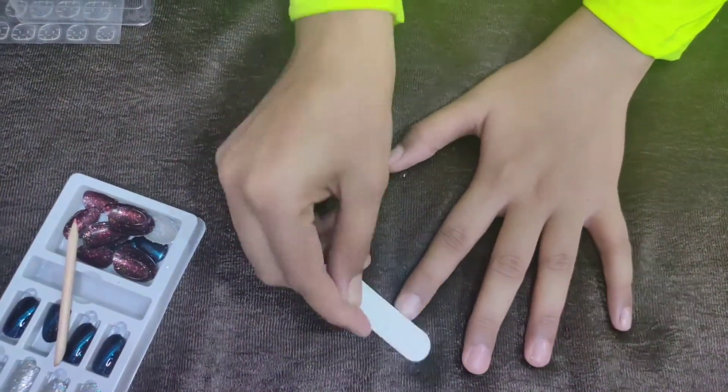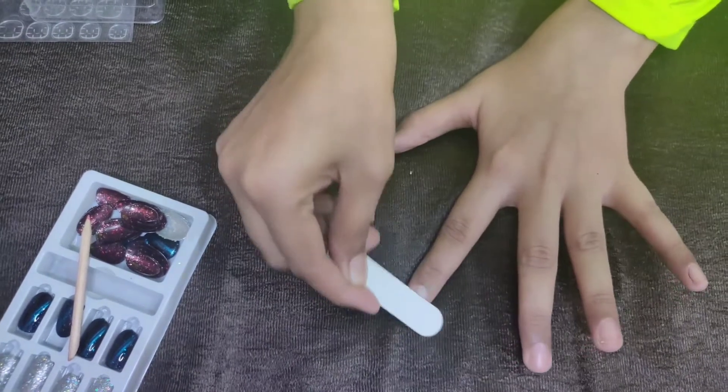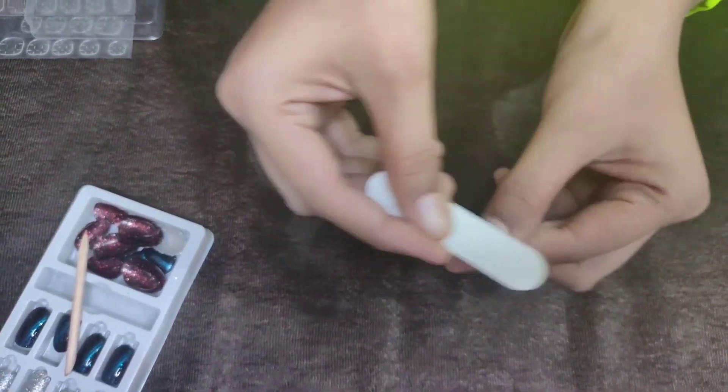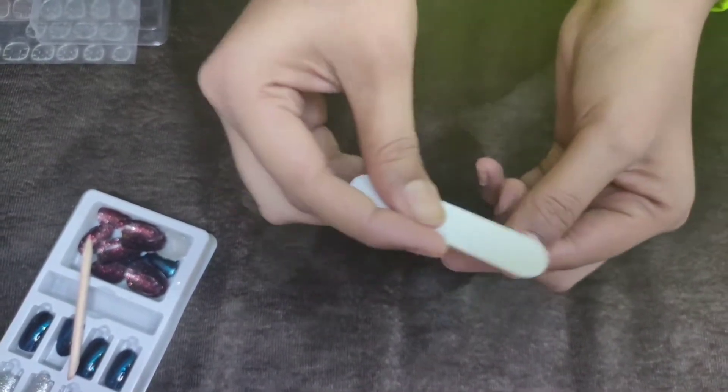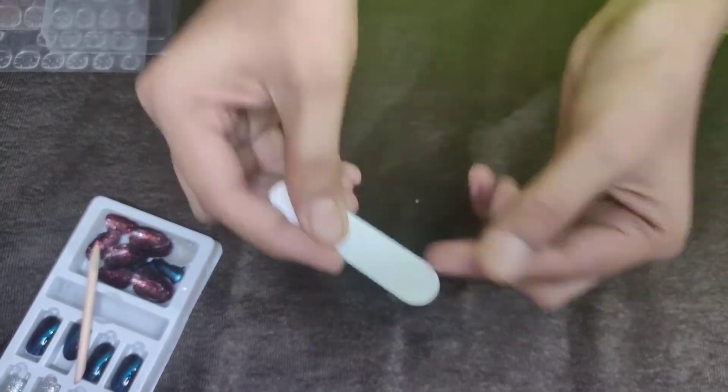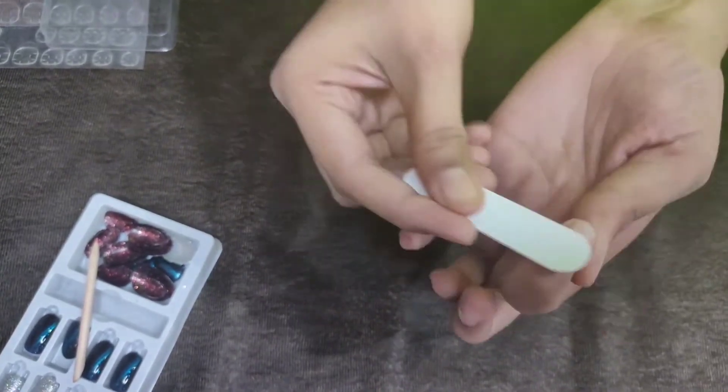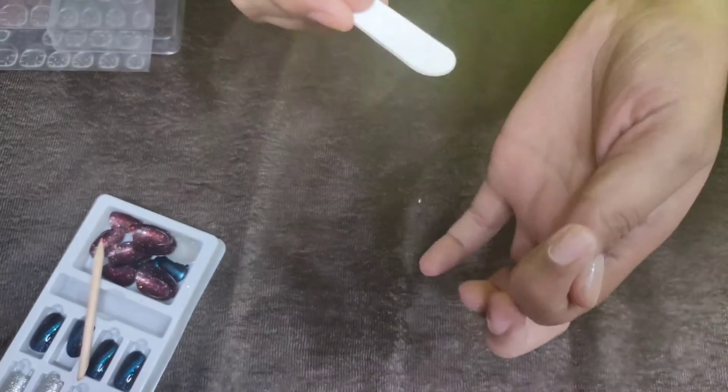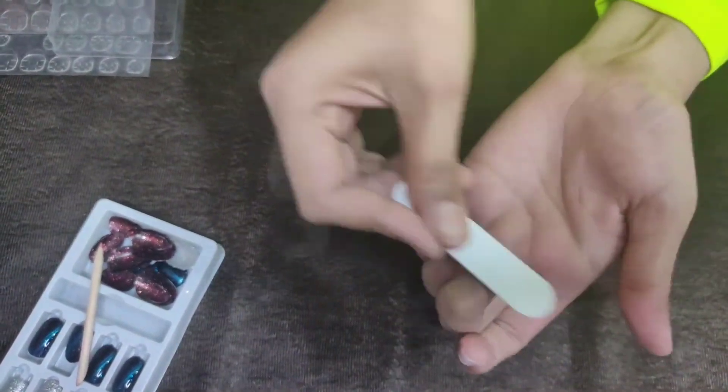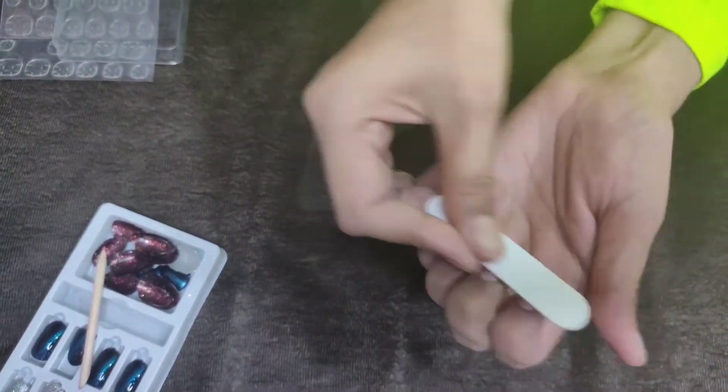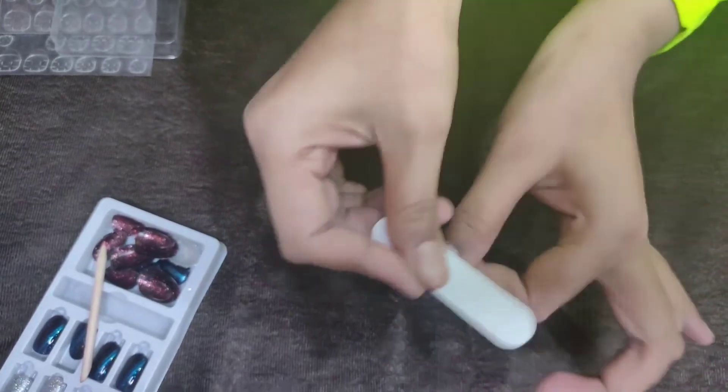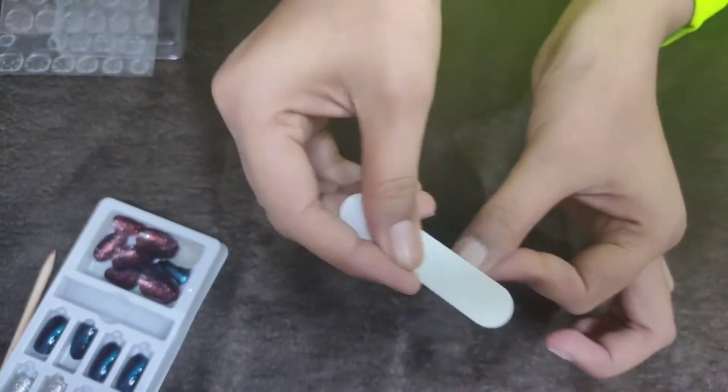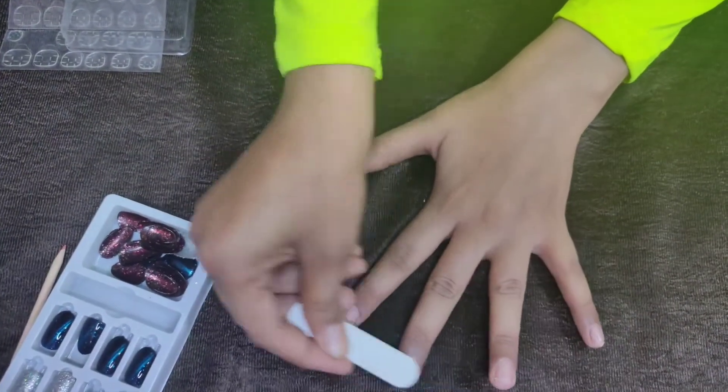Then you have to take the nail buffer and buff your nails. Why are you buffing your nails? Because you have to create a rough surface on your nails so that the gel glue will stick properly. After buffing, you have to remove the powder from your nails.